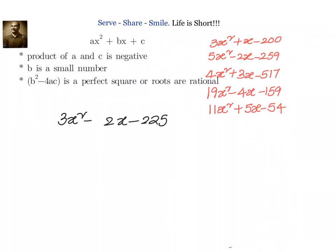In a specific scenario when we have product of a and c is negative and b is a very small number, also the roots are rational or b² minus 4ac is a perfect square.